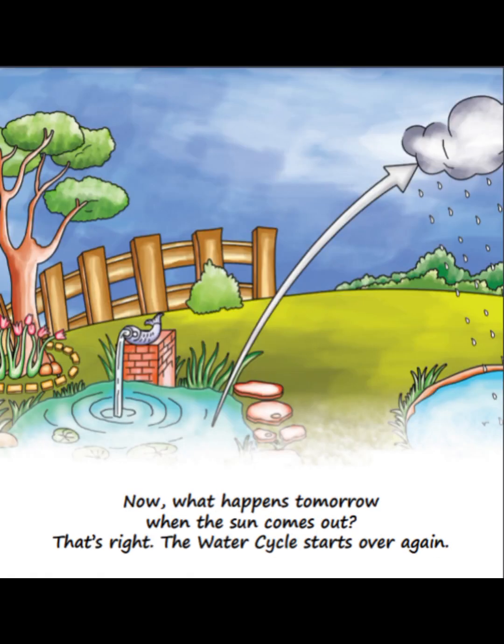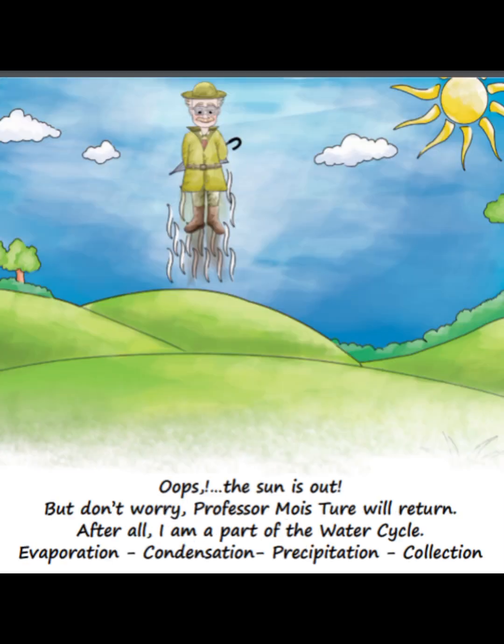Now, what happens tomorrow when the sun comes out? That's right — the water cycle starts over again. Oops, the sun is out. But don't worry, Professor Moise Tour will return. After all, I am a part of the water cycle.